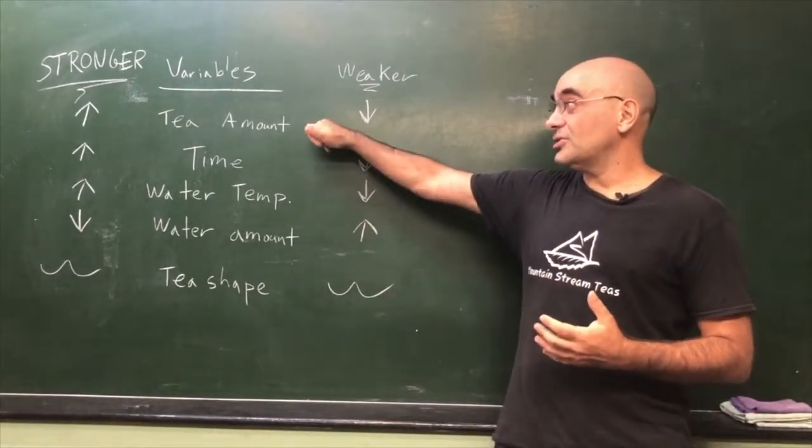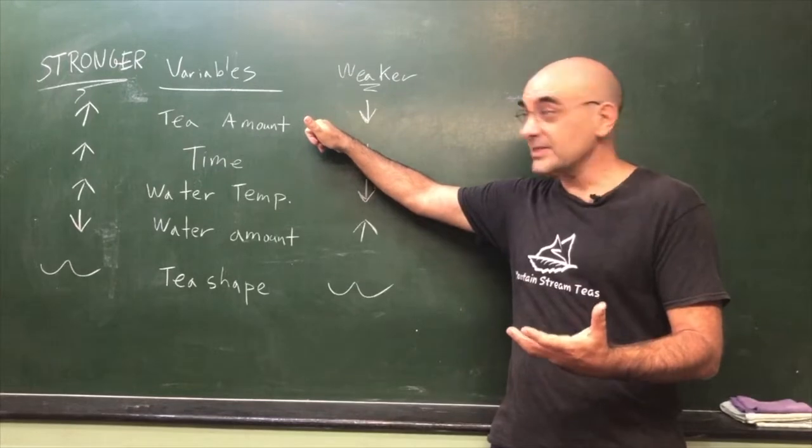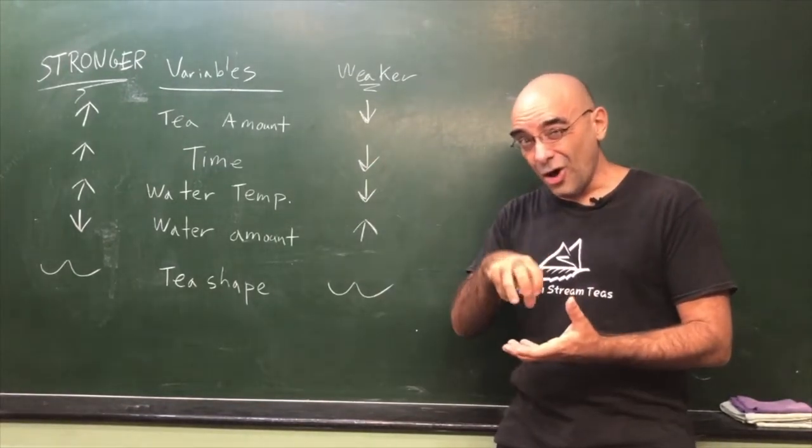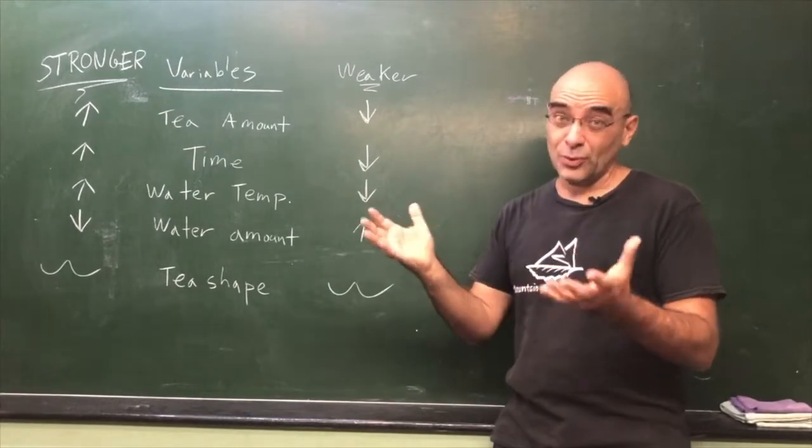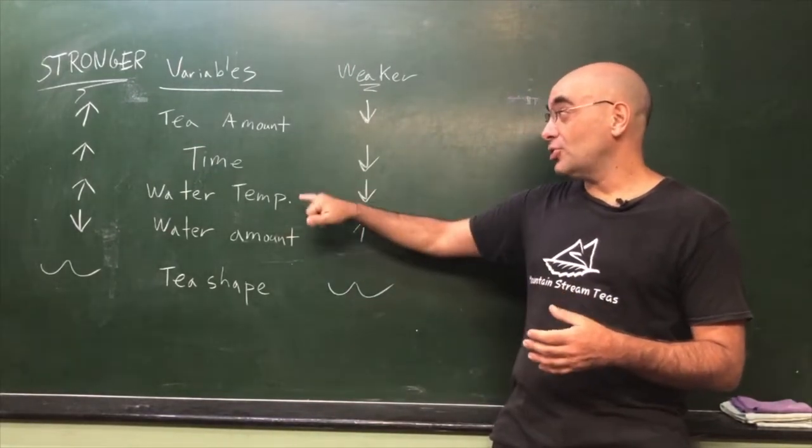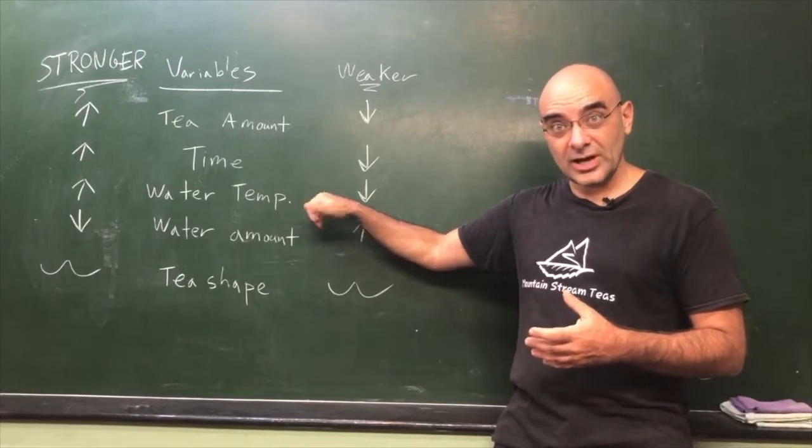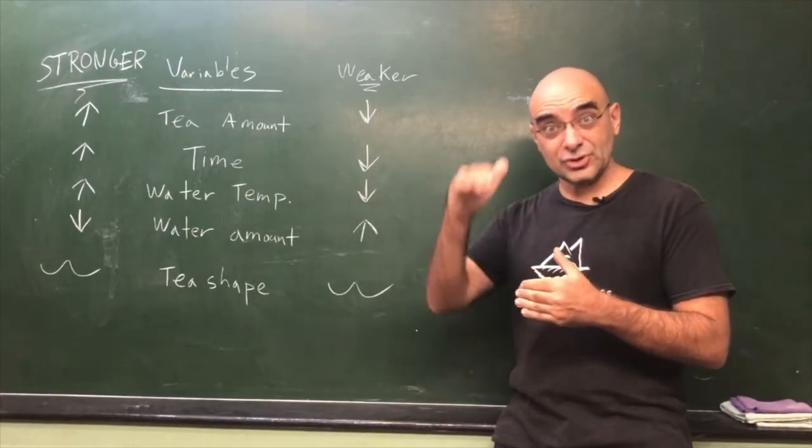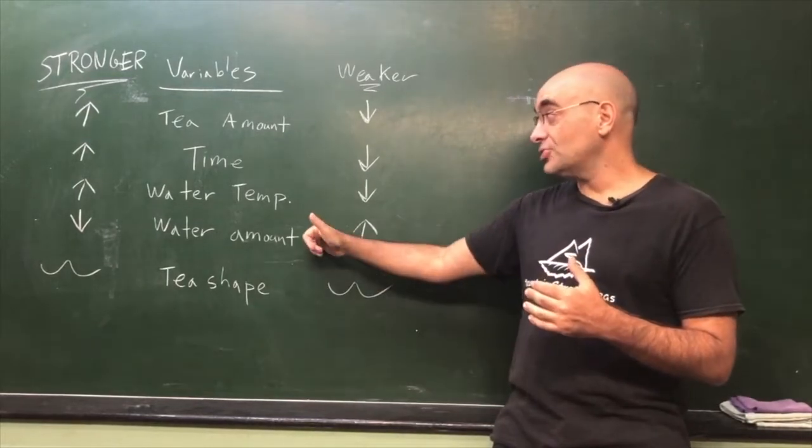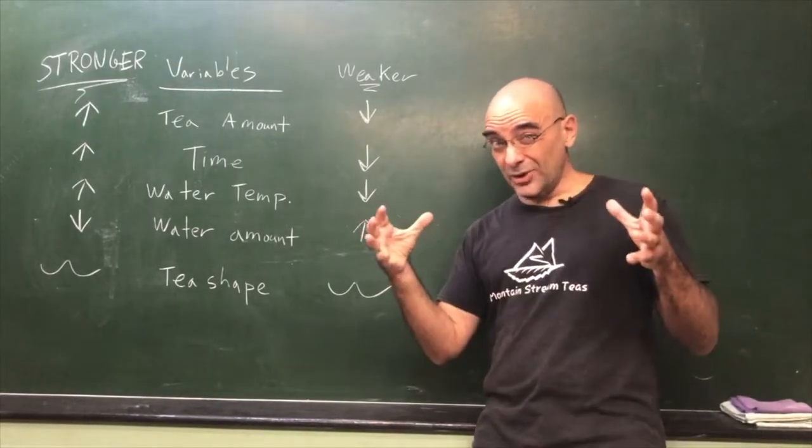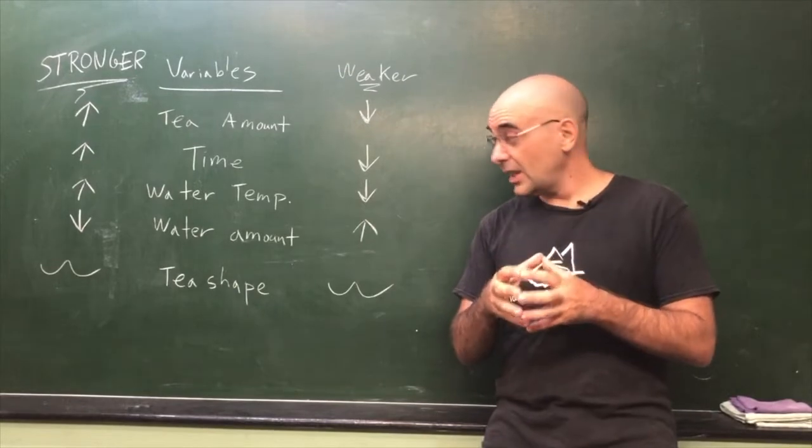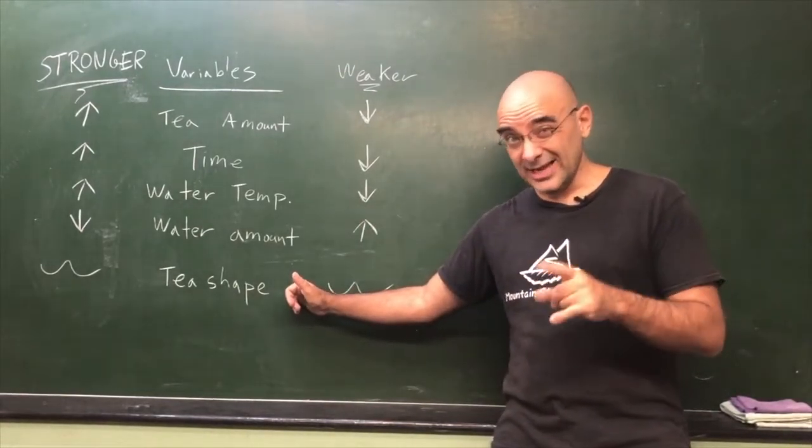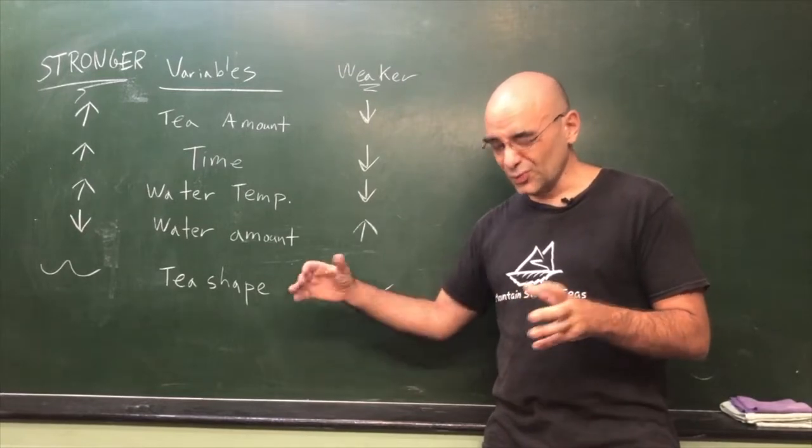So what can you do to change all that? Well, you can do the tea amount, how much tea you actually put into your vessel. You can do how much time the tea is in the hot water, or cold water for that matter. You can change the water temperature, the difference between high or low. You can change the water amount, and that goes to your vessel. You can have a bigger vessel or a smaller vessel.